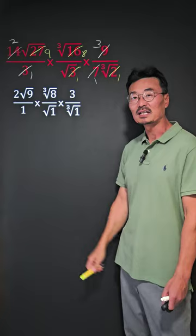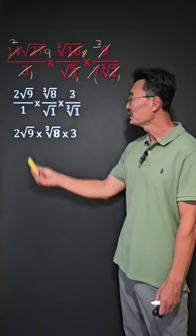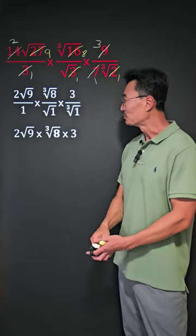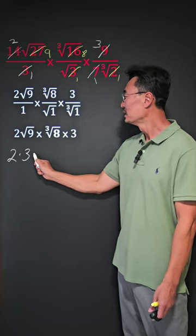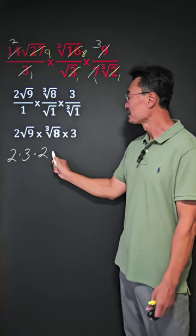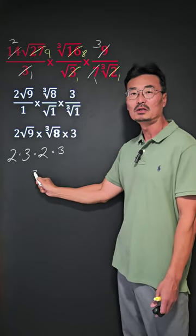Notice that we have 1s in the denominator, where if we simplify, we end up getting this. And of course, this will be 2 times 3 times 2 times 3, or 36.